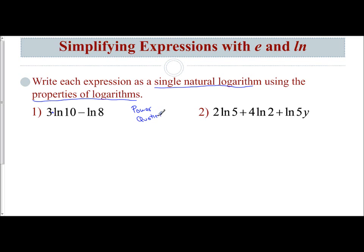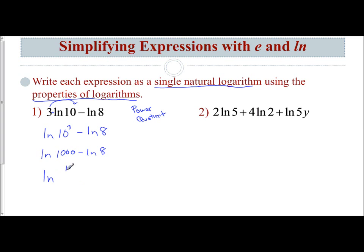Remember, you need to ask yourself: which comes first? Do you do your quotient rule first, or do you do your power rule first? I follow the order of operations and deal with anything involving exponents first. So this 3 comes out of the coefficient and goes up to the power of 10. We have natural log of 10 cubed minus natural log of 8. Then we apply our quotient rule: natural log of 1,000 divided by 8.